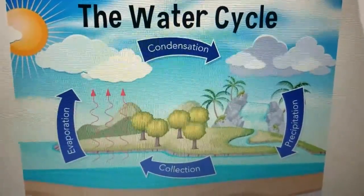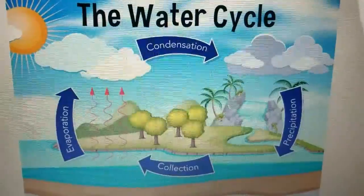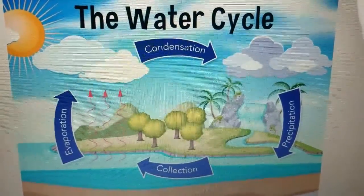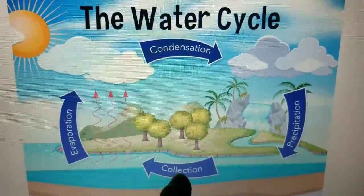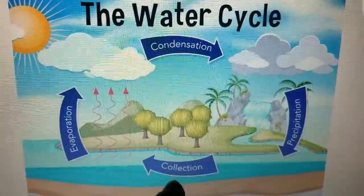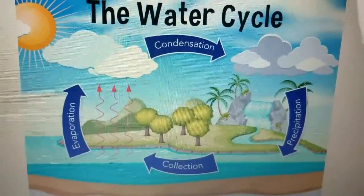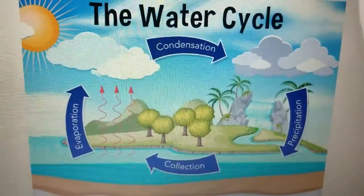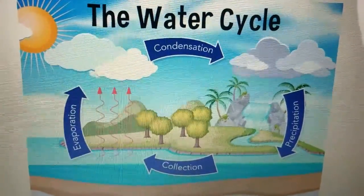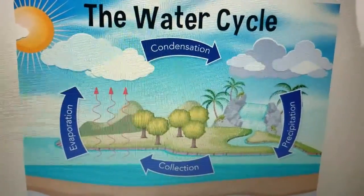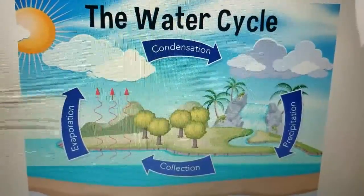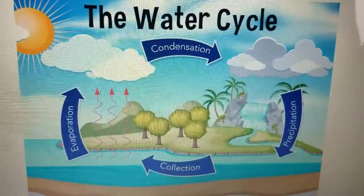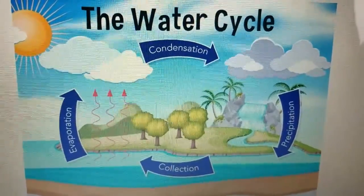After it precipitates, it enters a phase of the water cycle called collection. Collection is when all of that water that's fallen from the sky piles up down here on the earth. It could be in rivers or streams, it could be in puddles, or it could be in big piles of snow.